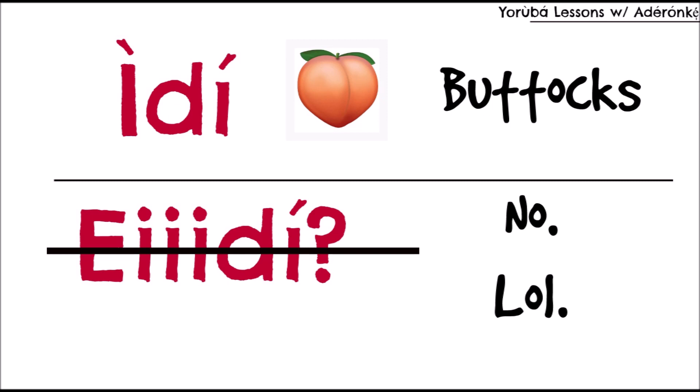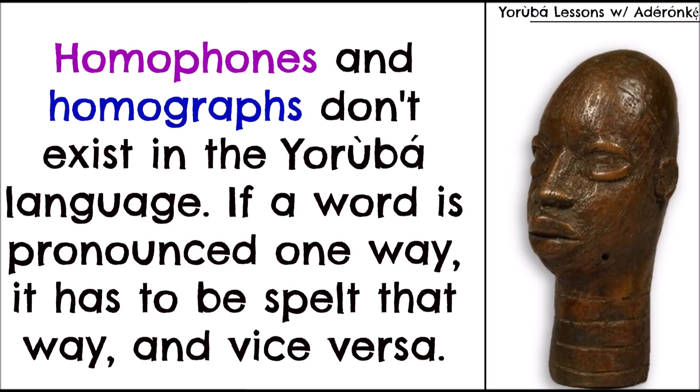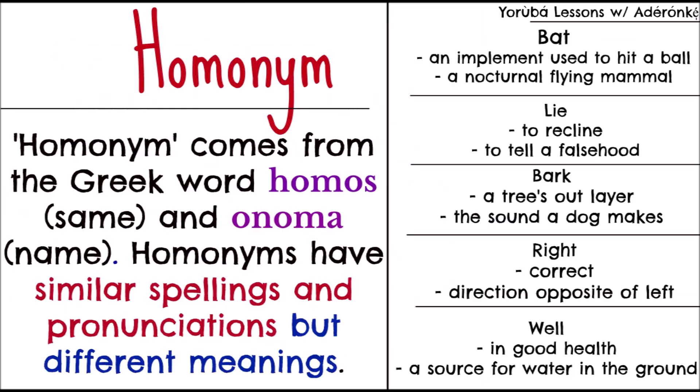If you say 'abo,' you can't say, oh, there's a version of it that means something else. Abo is plate. No — if it's written one way, it has to be pronounced that way. So what do we have then, if we don't have homophones and homographs? We have homonyms. In and of itself, we don't have homophones or homographs — we have homonyms.